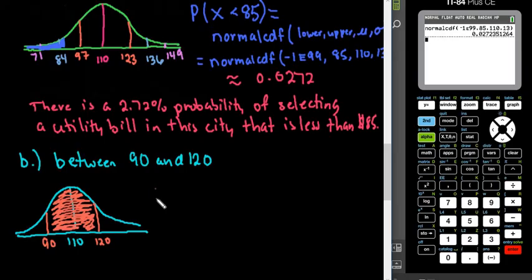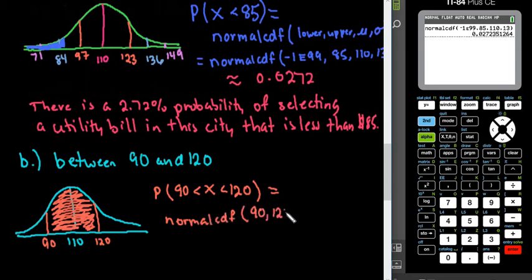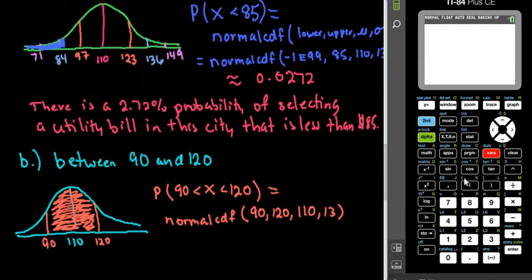So for this, what we are looking for is we are looking for the probability that our random variable X is greater than $90 but less than $120. So it's between $90 and $120. We would still do the same thing that we did up here with our lower and our upper. This time, this would be our lower. So if we were plugging this into our calculator, we would want it to read normal CDF. Our lower would be $90. Our upper would be $120. And our mean and our standard deviation do not change. So those would still be the same. So when I do the second distributions, option 2, my lower is 90, my upper is $120. My mean and my standard deviation did not change, so I don't have to change those.